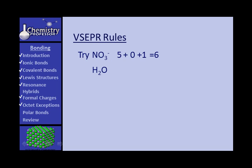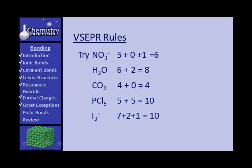For H2O, central is oxygen with six valence electrons, plus one for each hydrogen, giving a total of eight. For CO2, carbon is central with four valence electrons; you add nothing for oxygen — so four plus zero equals four. For PCl5, phosphorus is central with five valence electrons, plus one for each of the five chlorines, giving a total of ten. For I3⁻, iodine is central with seven valence electrons, plus two from the other two iodines, plus one for the negative charge, giving a total of ten.